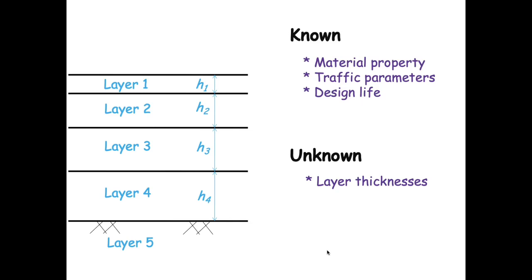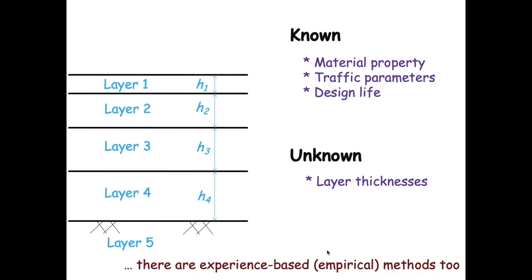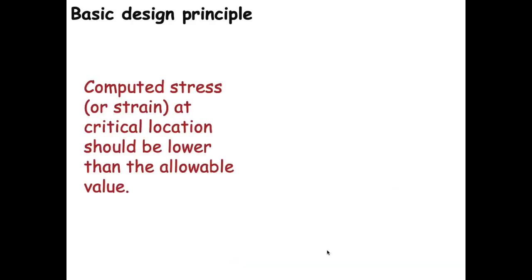This can be done empirically — using experience-based design templates directly. You know the kind of soil, the expected traffic, and the thicknesses that have survived, and you provide that thickness. The method I'll be discussing is a popular method known as the mechanistic-empirical pavement design method. Coming back to general design principles for any civil engineering structure — a dam, slope stability, column or beam design — we compute stresses at critical locations and check that their values are lower than the allowable values.